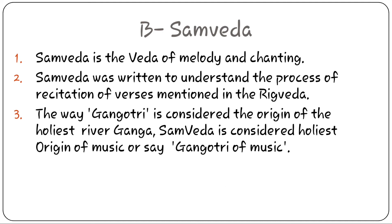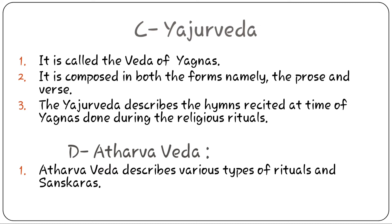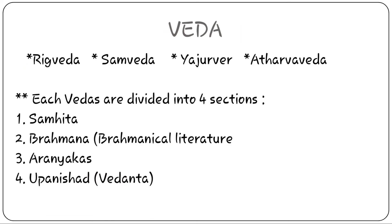Next is Sam Veda — the Veda of melody and chanting. Sam Veda was written to understand the process of recitation of verses mentioned in Rig Veda. Just as Gangotri is considered the origin of the holiest river Ganga, Sam Veda is considered the Gangotri of music. Next is Yajur Veda — it is called the Veda of yajnas. And the last one is Atharva Veda, which describes various types of rituals and sanskaras.